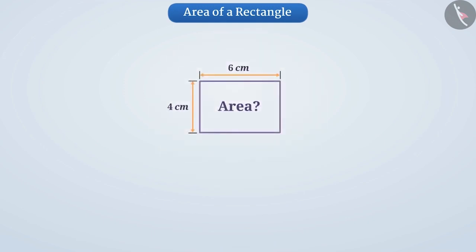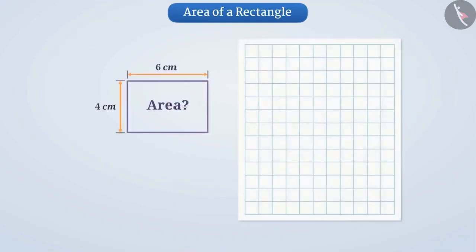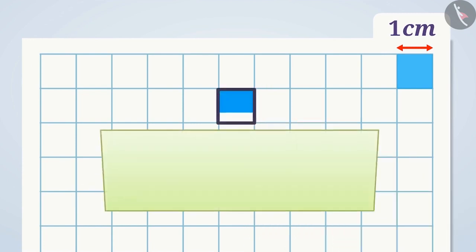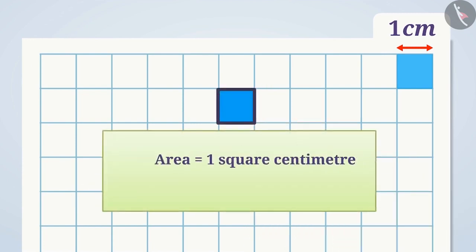To find the area, we will use a squared paper or graph paper, where every square measures 1 cm multiplied by 1 cm. Thus, the area of each square is 1 cm², or in short like this.